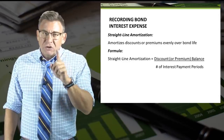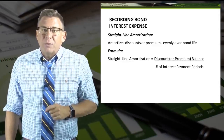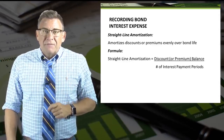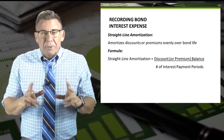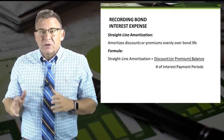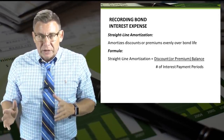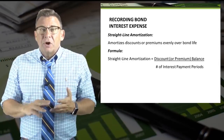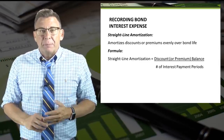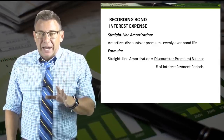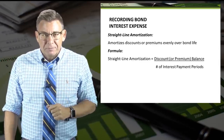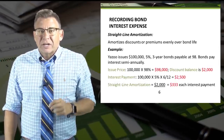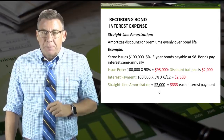How do you apply an amortization schedule? An amortization schedule is a complete table of periodic loan payments, showing the amount of principal and amount of interest that comprise each payment until the loan is paid off at the end of its term.